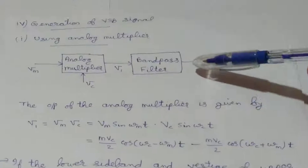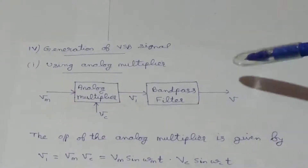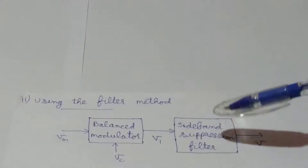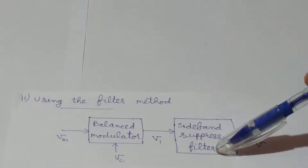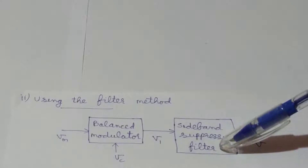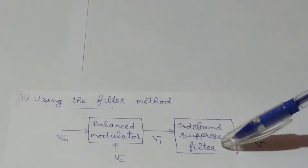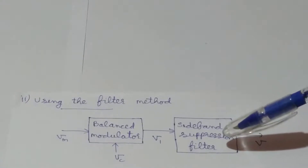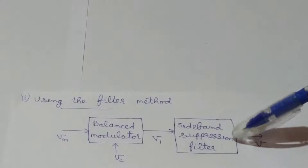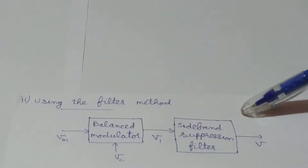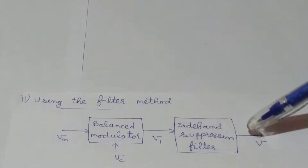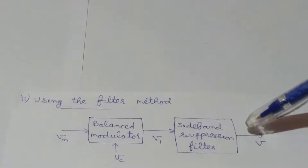From this it is clear that by using this arrangement we can generate the required vestigial sideband signal at the output. Let's now consider the second method for the generation of VSB signal, that is by using the filter method. This block diagram remains the same as in the case of single sideband generation by using the filter method, and the only difference is in the cutoff frequency values selected for the sideband suppression filter. The balanced modulator generates the double sideband suppressed carrier signal, and the sideband suppression filter suppresses most of the unwanted sideband and allows a vestige of it along with the other sideband, giving our required vestigial sideband signal at the output.